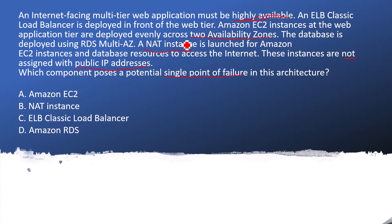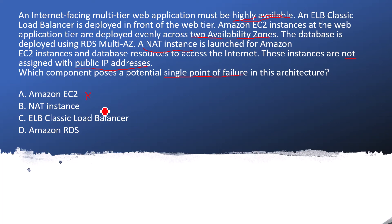The last hint point is single point of failure, and we have already figured out that there is only one NAT instance, which will cause the single point of failure. Let's jump on the answers. Option: Amazon EC2 instance — no, because they have already mentioned two availability zones. NAT instance — yes, this is already mentioned in the question as only one, so this is the right answer.